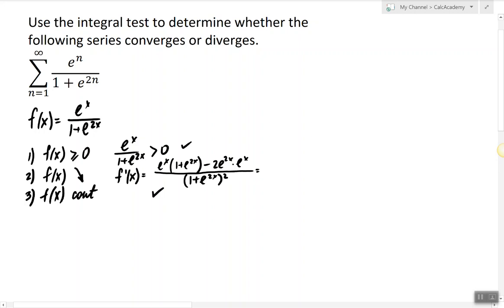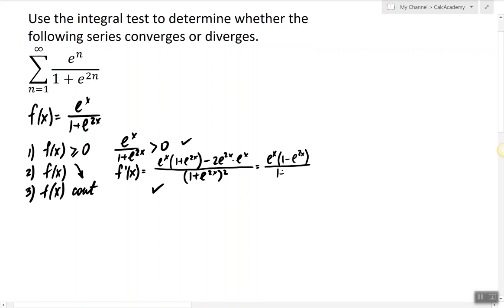So the denominator is always positive, and in the numerator we have e^x(1 - e^(2x)). Now e^x is always positive, the denominator is always positive, the expression 1 - e^(2x) is negative when x is greater than 0. So starting at x equals 1, it's going to be negative. So the derivative is always negative, therefore the function is always decreasing.